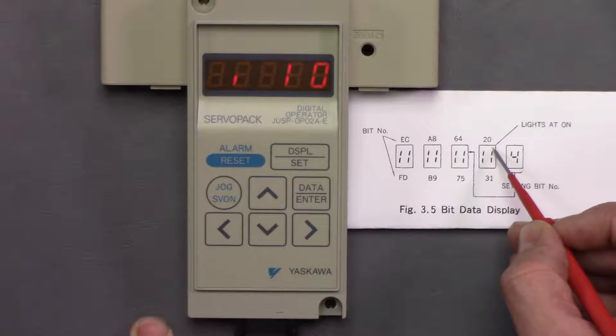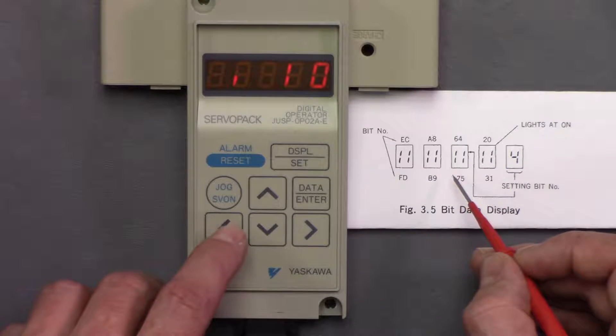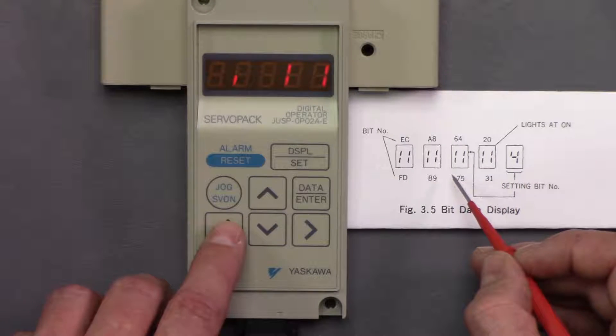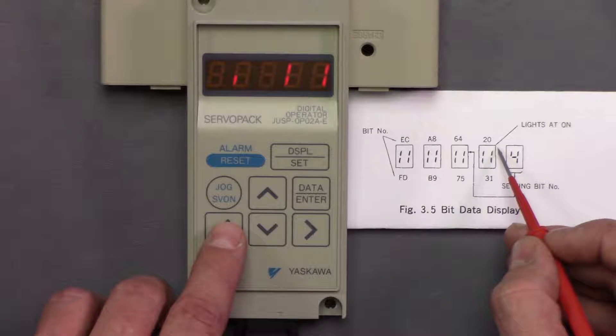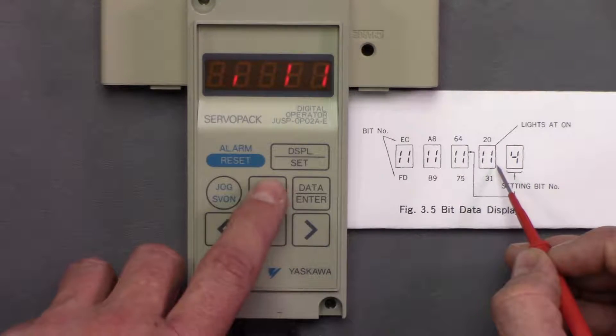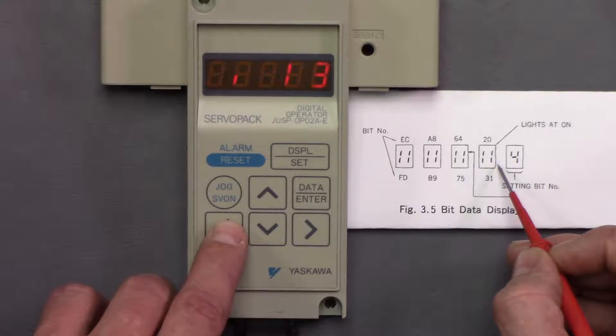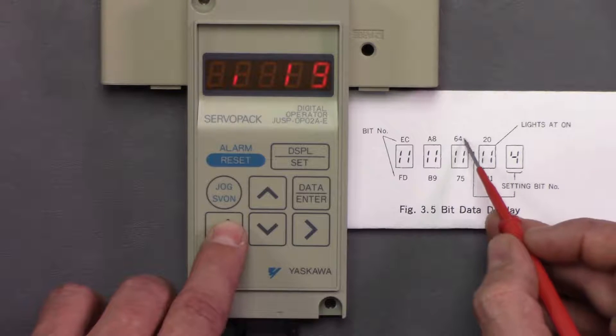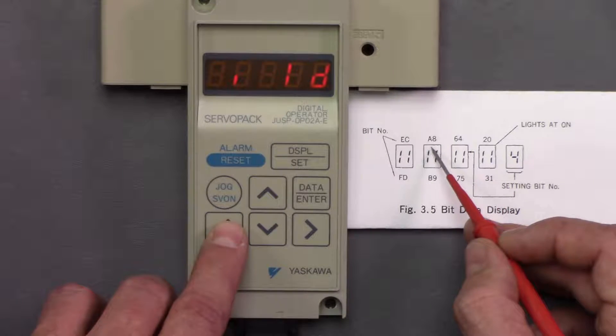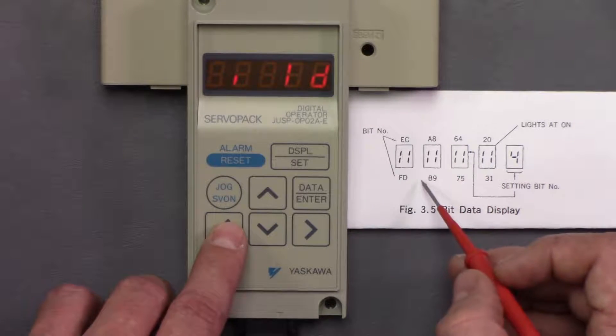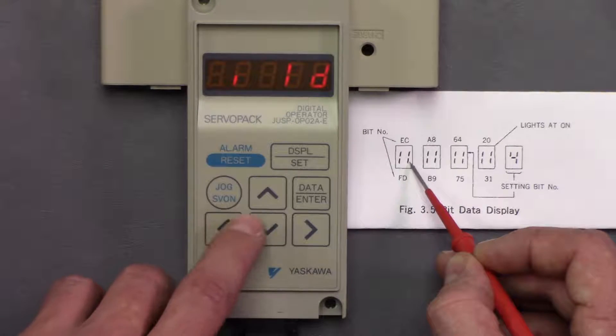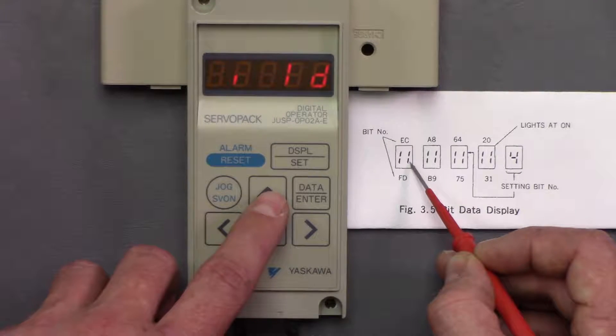Now, if I want to change any of these other bits, I need to use this left arrow, and it's going to change from value zero to value one. I can toggle that bit on and off. As I keep hitting this left arrow, it's going to keep going to the different bit values here. So on bit D, we're going to be changing this bit if we turn it on or off.